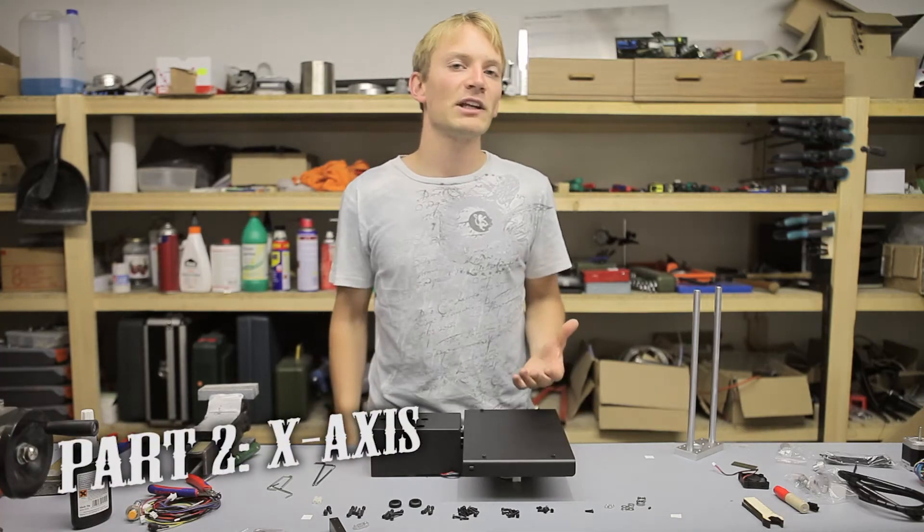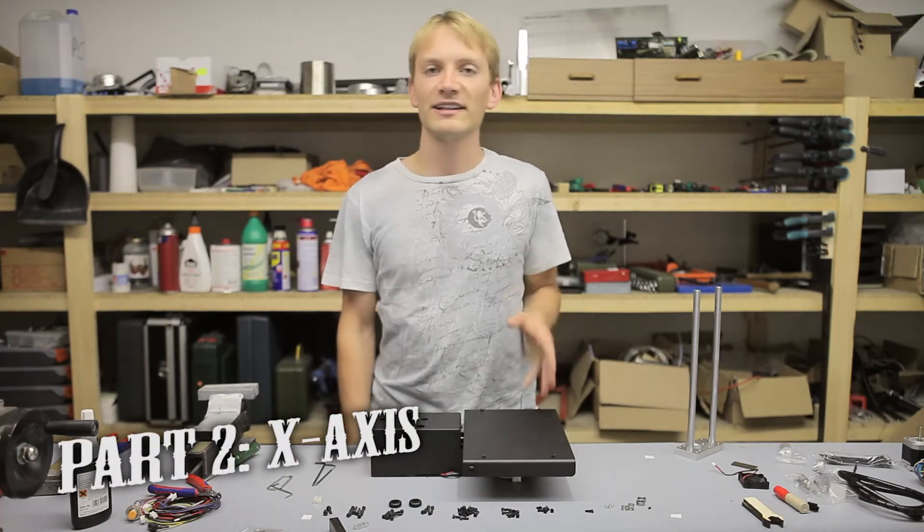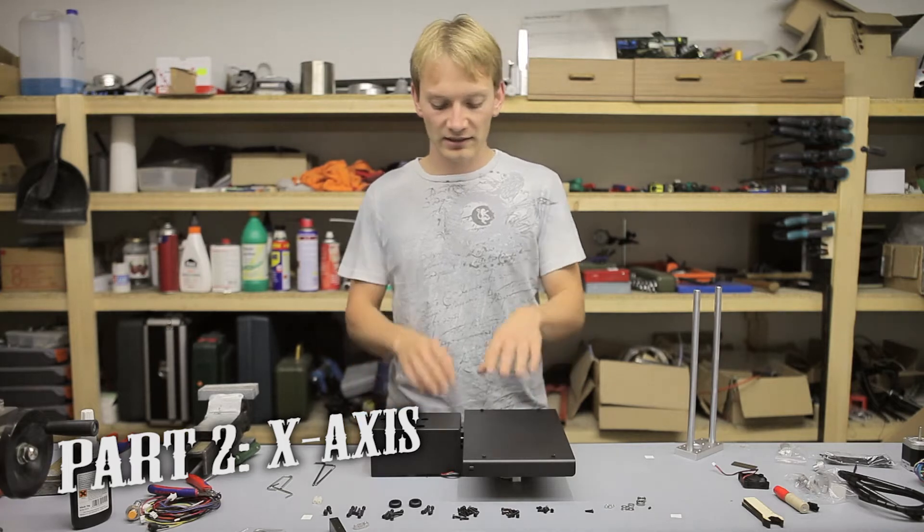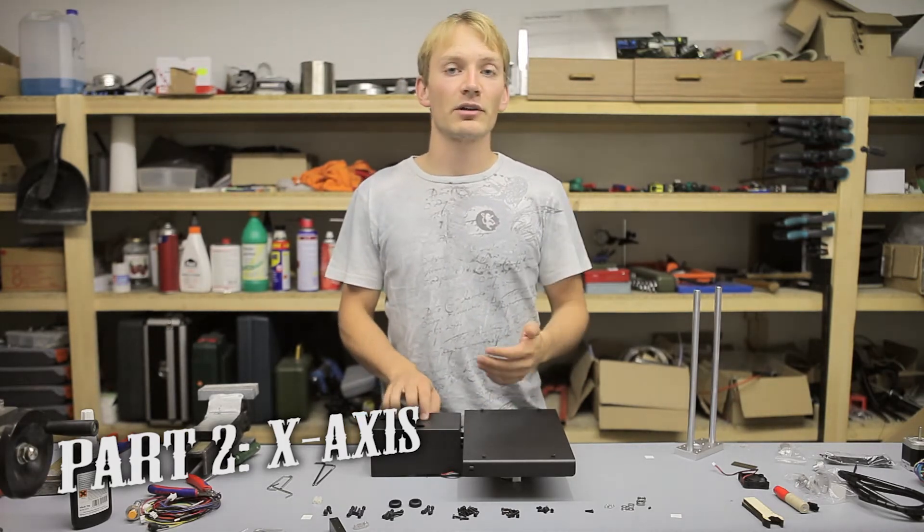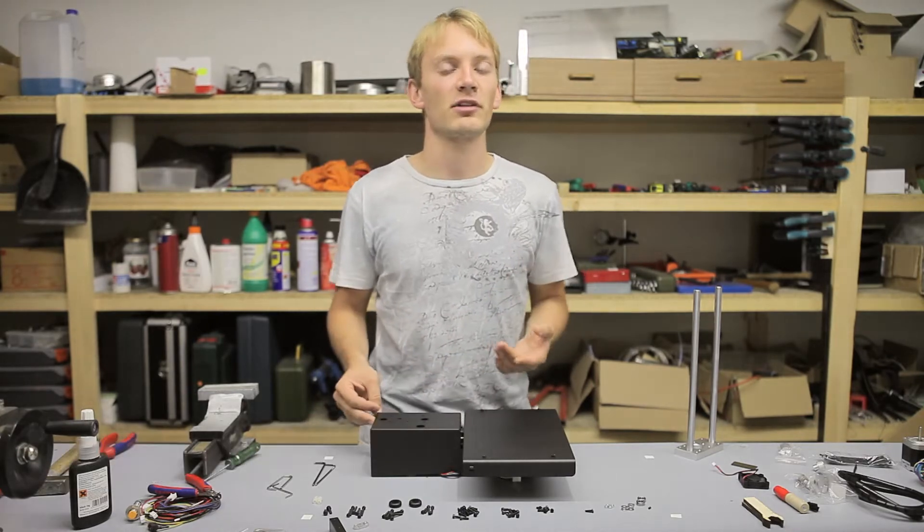I'm Tom and this is my third video for the Printerbot Simple Metal Kit. Last time we looked at assembling the base of the printer with the x-axis. Today we're going to start building the z-axis and we're going to put the electronics in.